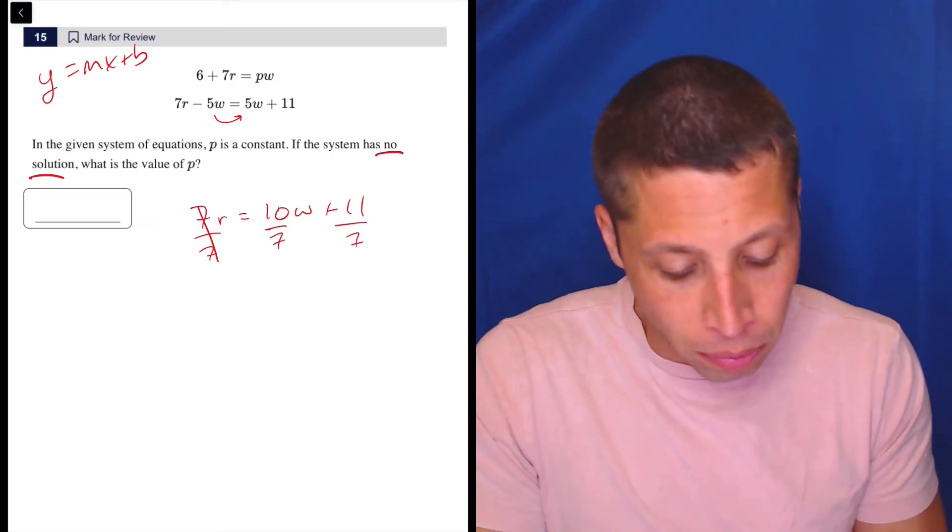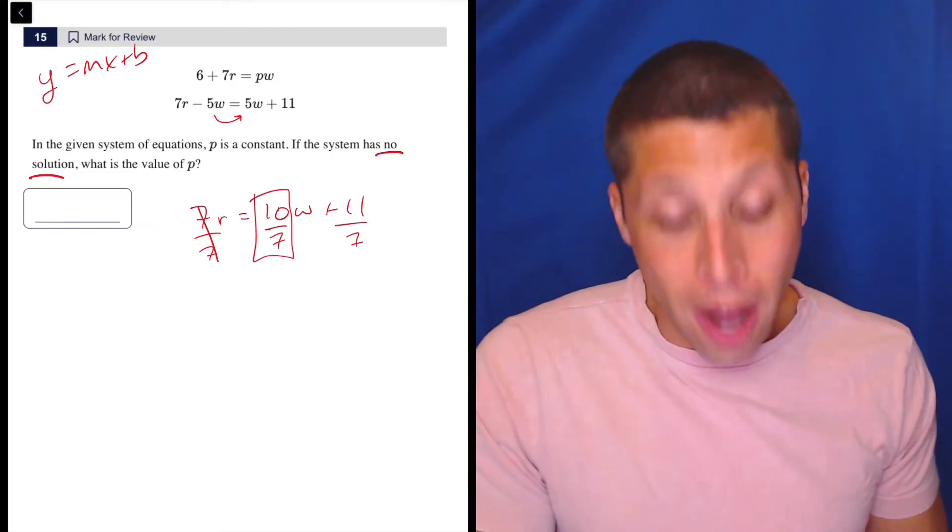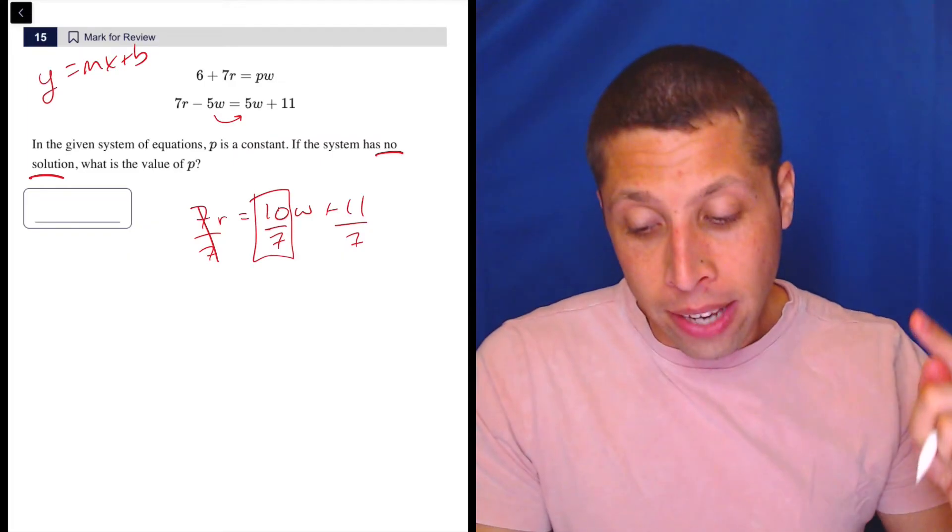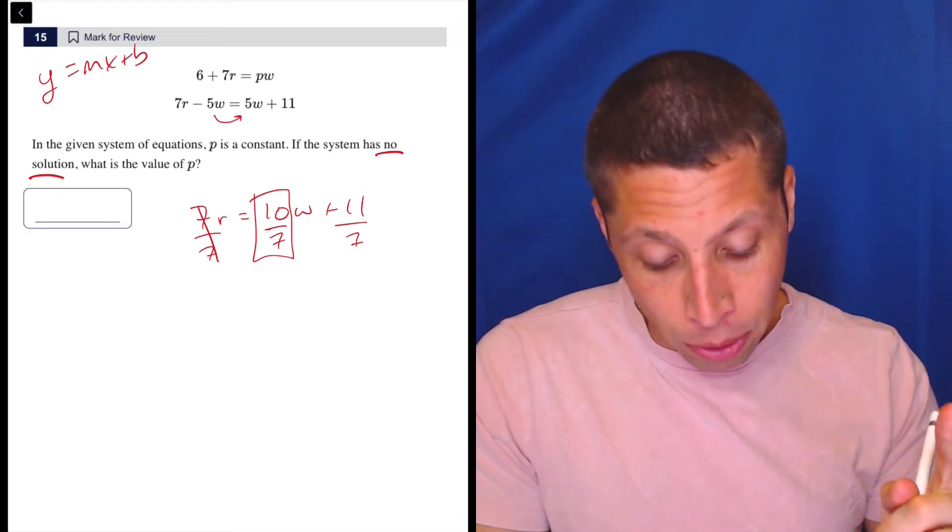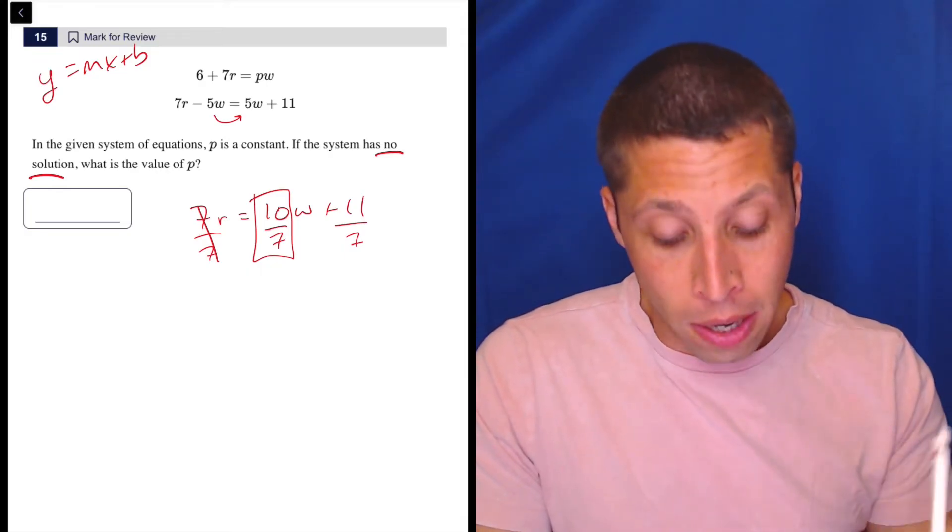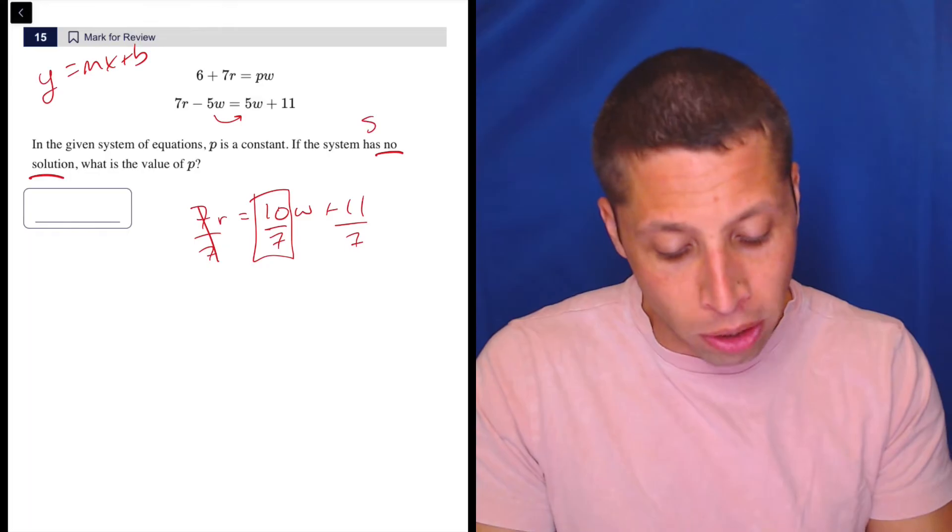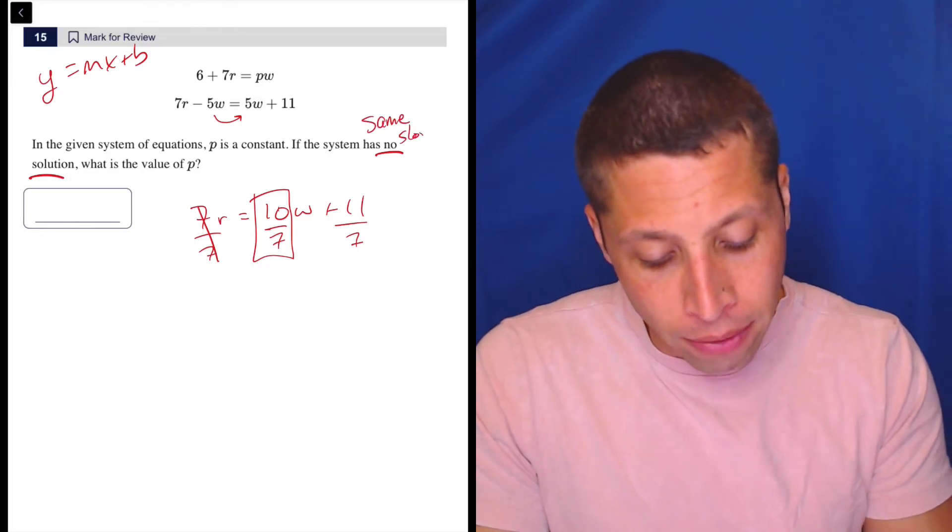Now I don't even need to rewrite it. I have the number I want. I want the slope because if there are different slopes, I'm going to have one solution, but they're telling me there are no solutions, meaning I have to have the same slope.